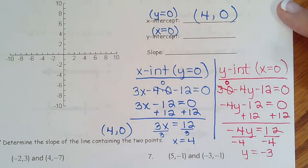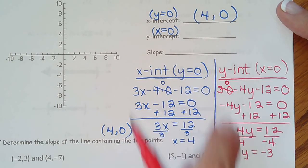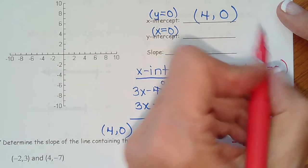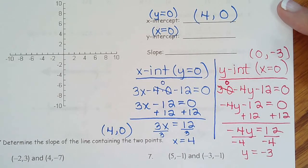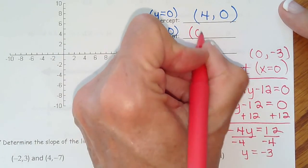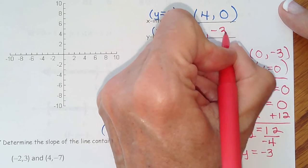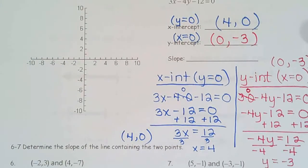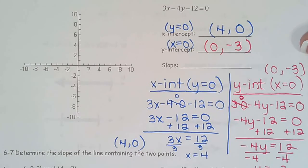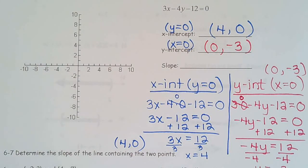So as an ordered pair, that would be, I'll put it up here so we can see it. x is zero, y is negative three, so it would be zero, negative three. So now we can put that here, zero, negative three. So if we want, we can go ahead and put those points on the graph. So four, zero, and zero, negative three. So here's four, zero.